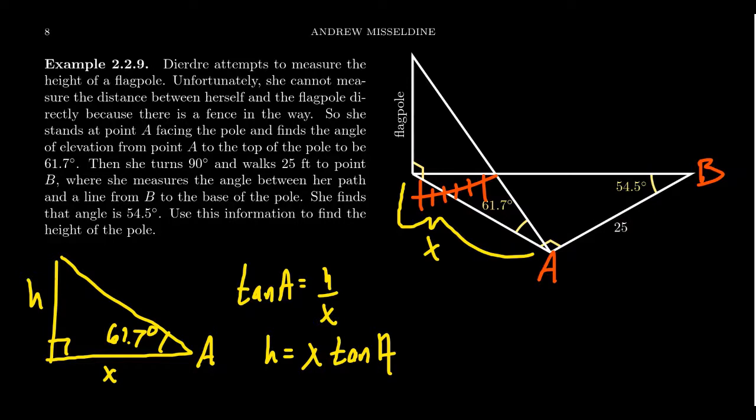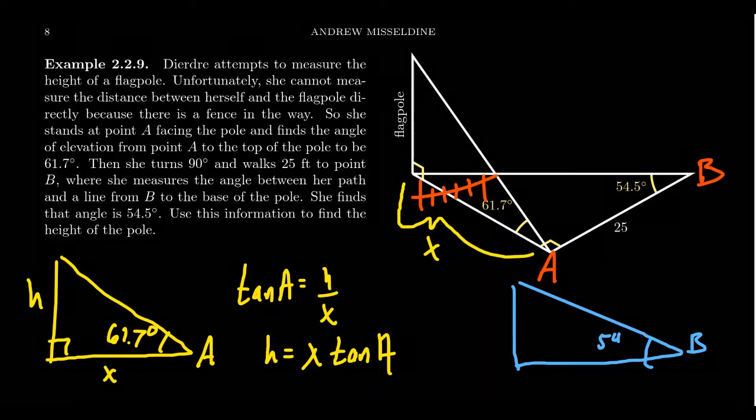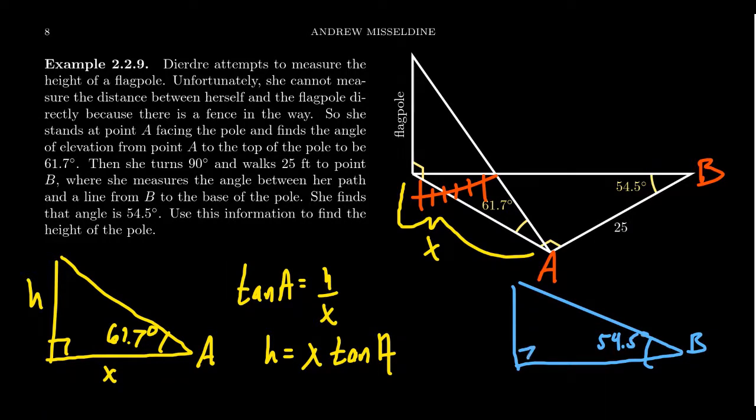Let's look at this second triangle. It's a right triangle itself. We have this angle B, which equals 54.5 degrees. You have a right angle. We know this distance here is 25, and we know this distance over here is X, the same X in play right here.